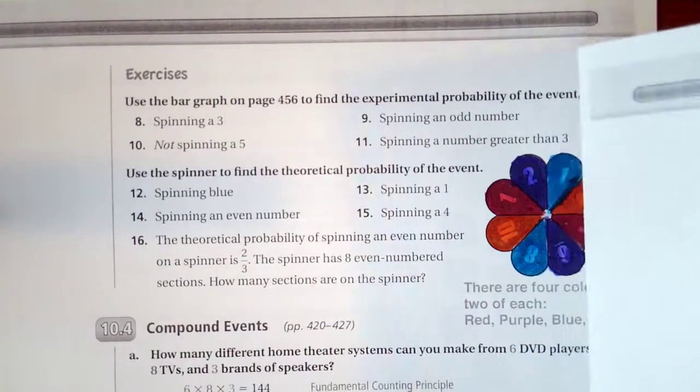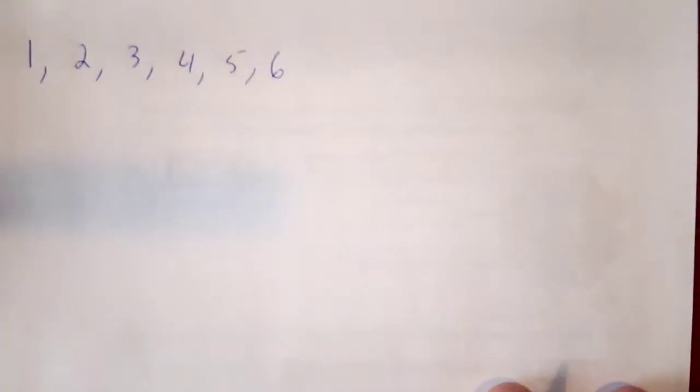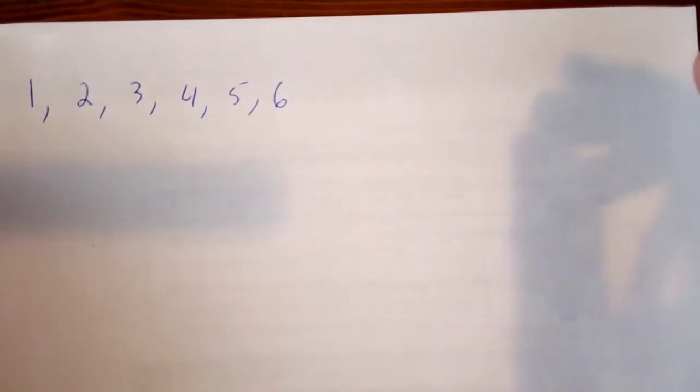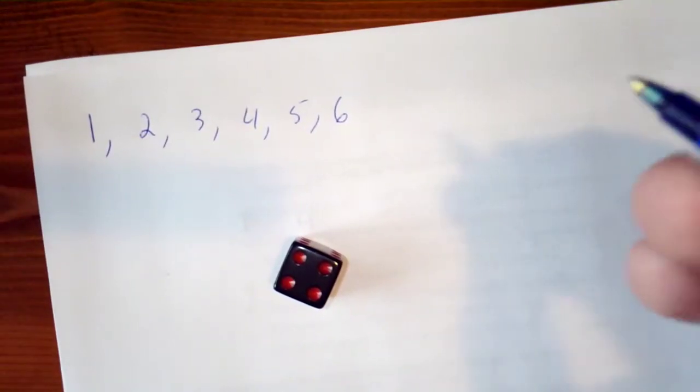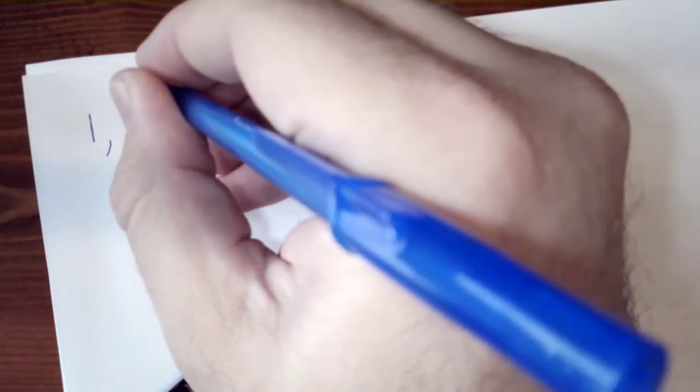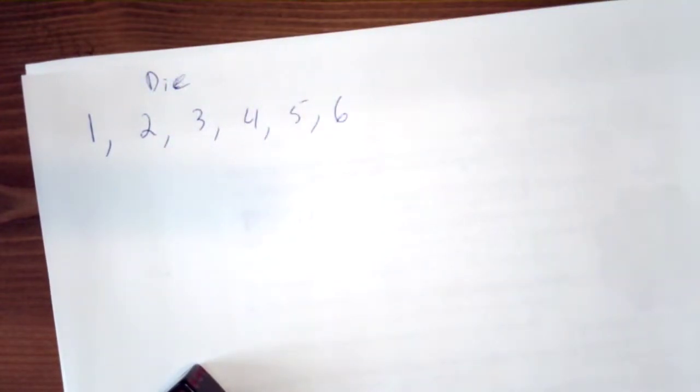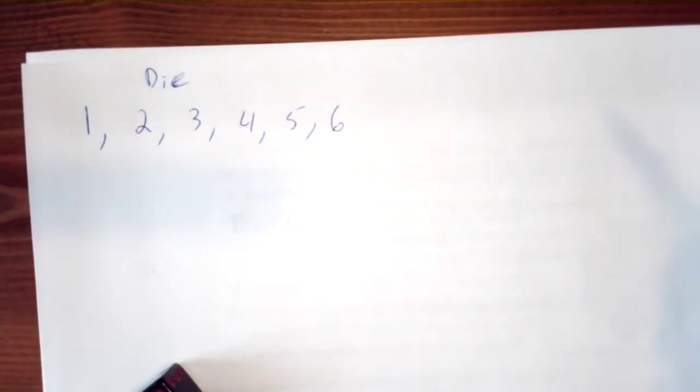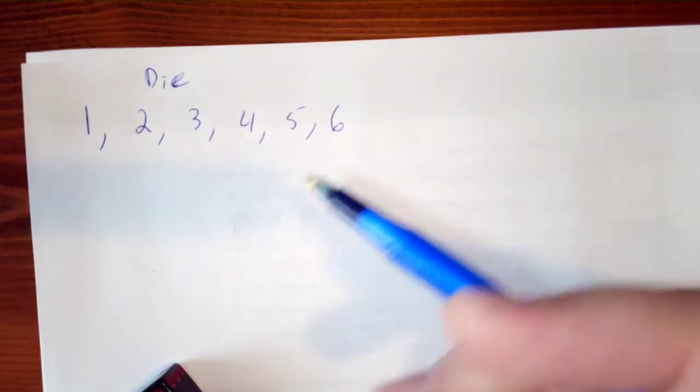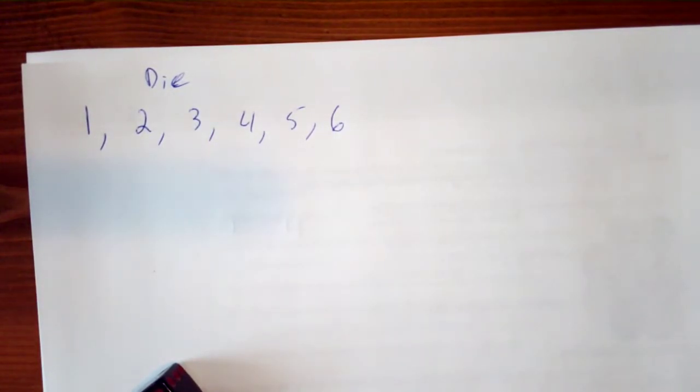Okay, let's look at something a little bit different. We have a six-sided number cube or die. So you're rolling a die and you want to find out the probability of certain events happening.